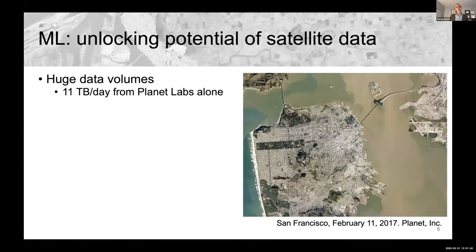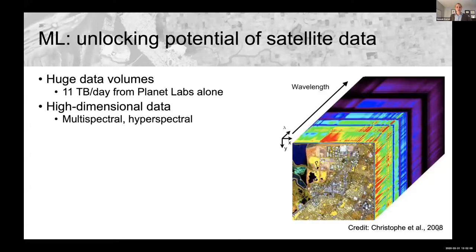Why do we need to use machine learning for satellite data? It's really a perfect storm. In satellite earth observation we have huge data volumes — from Planet Labs alone, 11 terabytes of data per day of the planet. These data are also very high dimensional: not only large spatially, but they also have multispectral and hyperspectral channels seeing beyond the visible and even beyond optical bands.